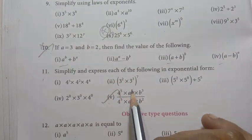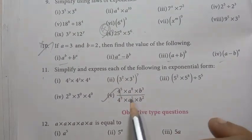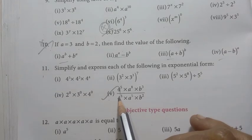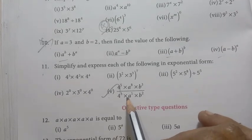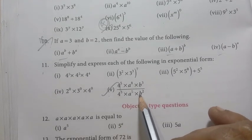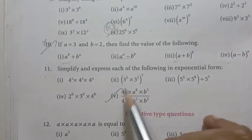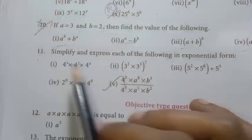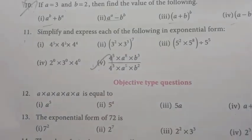Eleventh one, fifth sum: simplify 4 power 5 into a power 8 into b cubed, divided by 4 cubed into a power 5 into b squared. This is repeated and important.